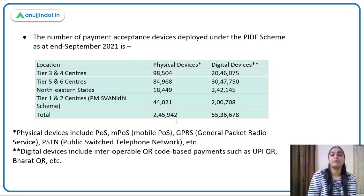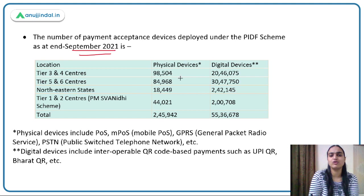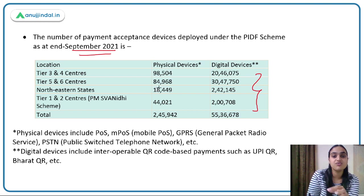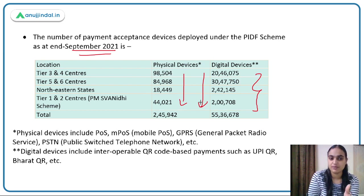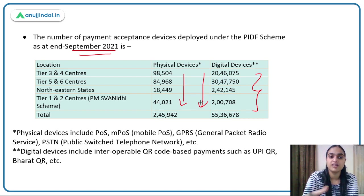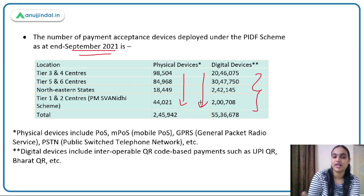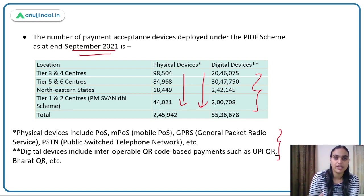Looking at the number of payment acceptance devices deployed under this scheme till September 2021: both physical devices (for card payments at point of sale) and digital devices (for QR-based payments like UPI QR and Bharat QR) have been deployed under this very scheme. This money is being utilized to deploy payment infrastructure across India.